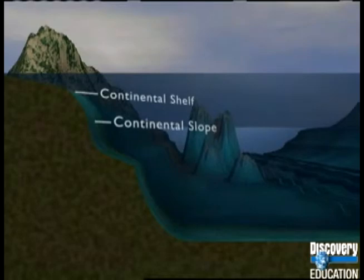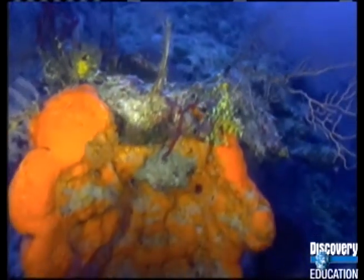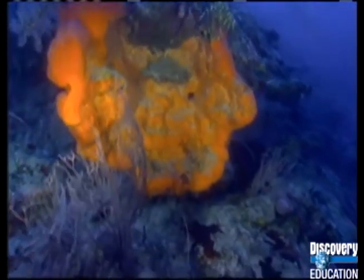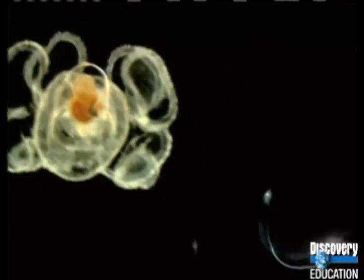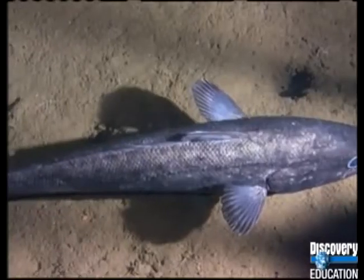Beyond the continental shelf is the continental slope. It marks the end of the rocks that make up the continent and the beginning of the deep ocean basin. The uppermost part of the continental slope is an area called the transition zone. Some sunlight penetrates to this zone, although it is generally not enough to support many photosynthetic organisms. Many animals here eat organisms that drift down from the neuritic zone, while others swim upward at night to feed in the nutrient-rich waters. Octopuses, squids, lanternfish, rattailfish, viperfish, jellyfish, and hatchetfish swim in the upper transition zone.